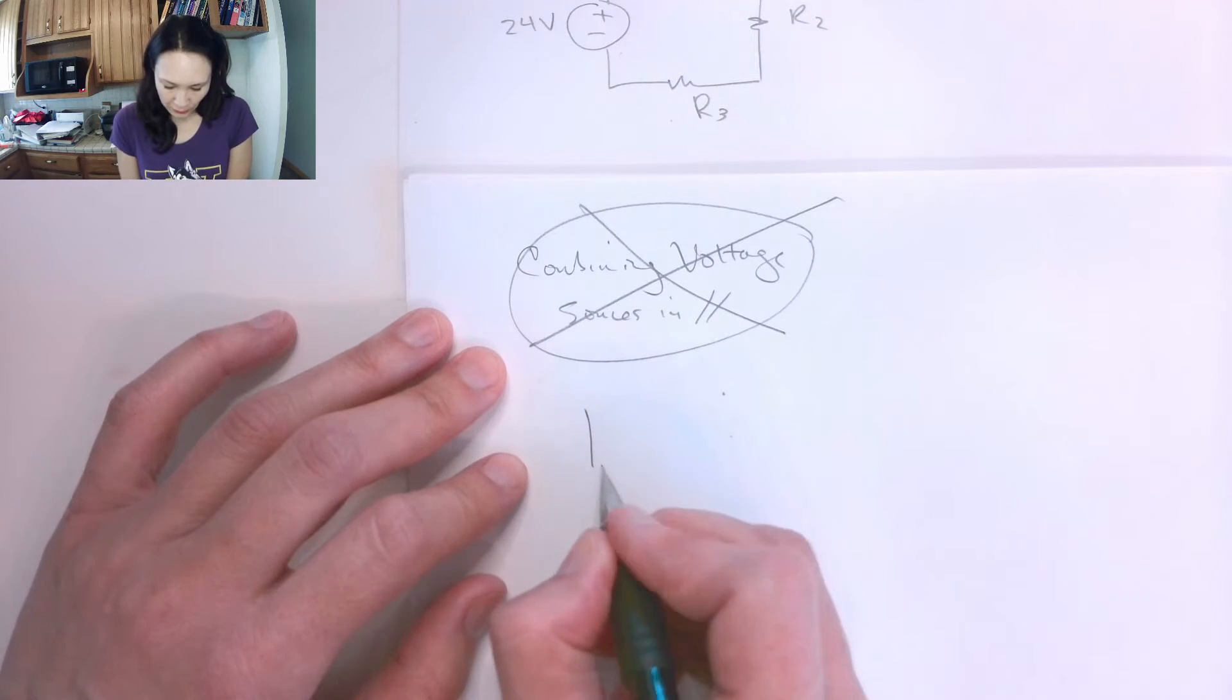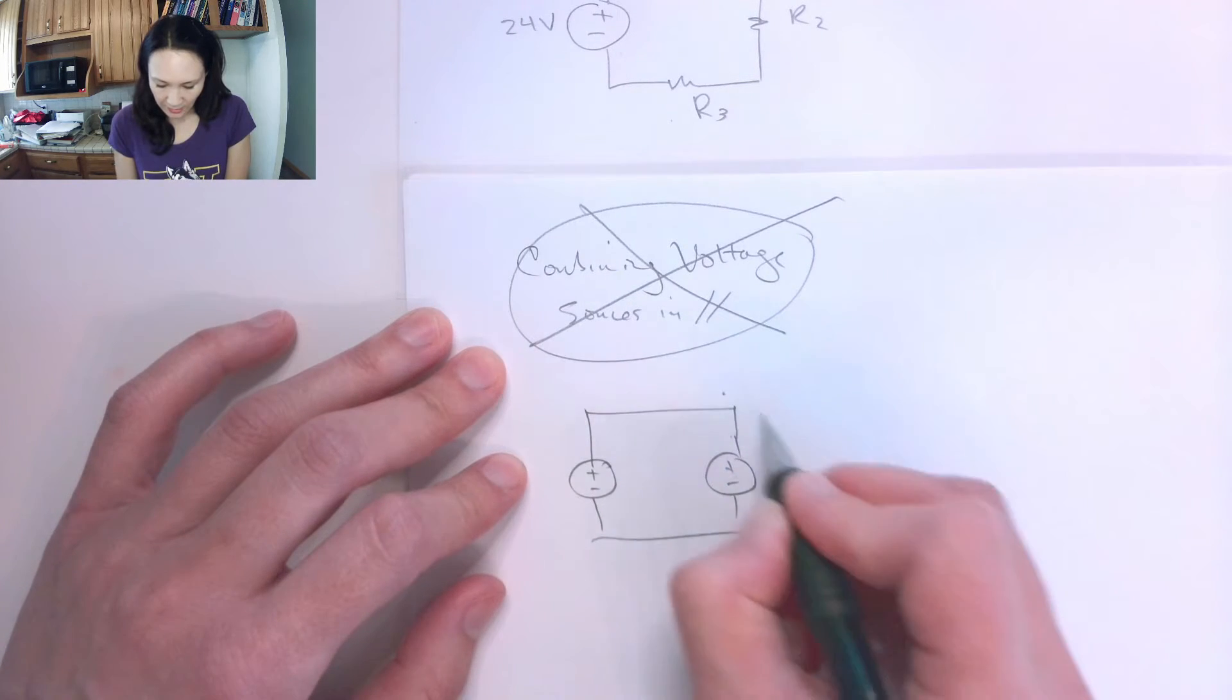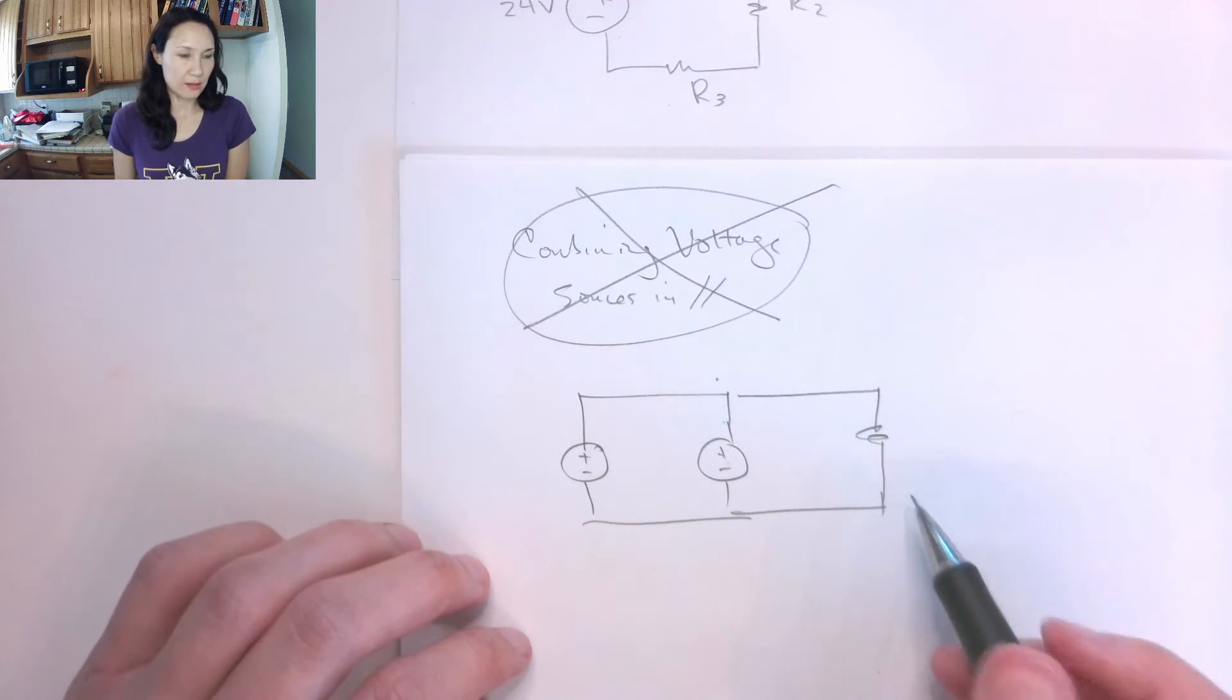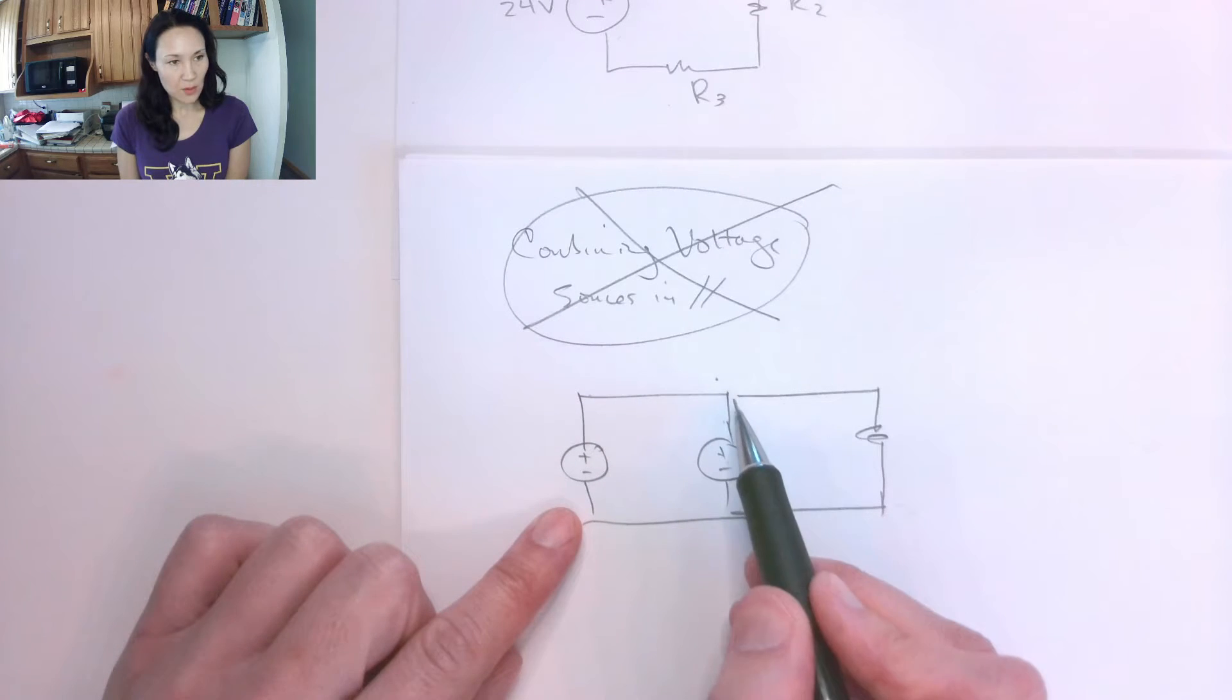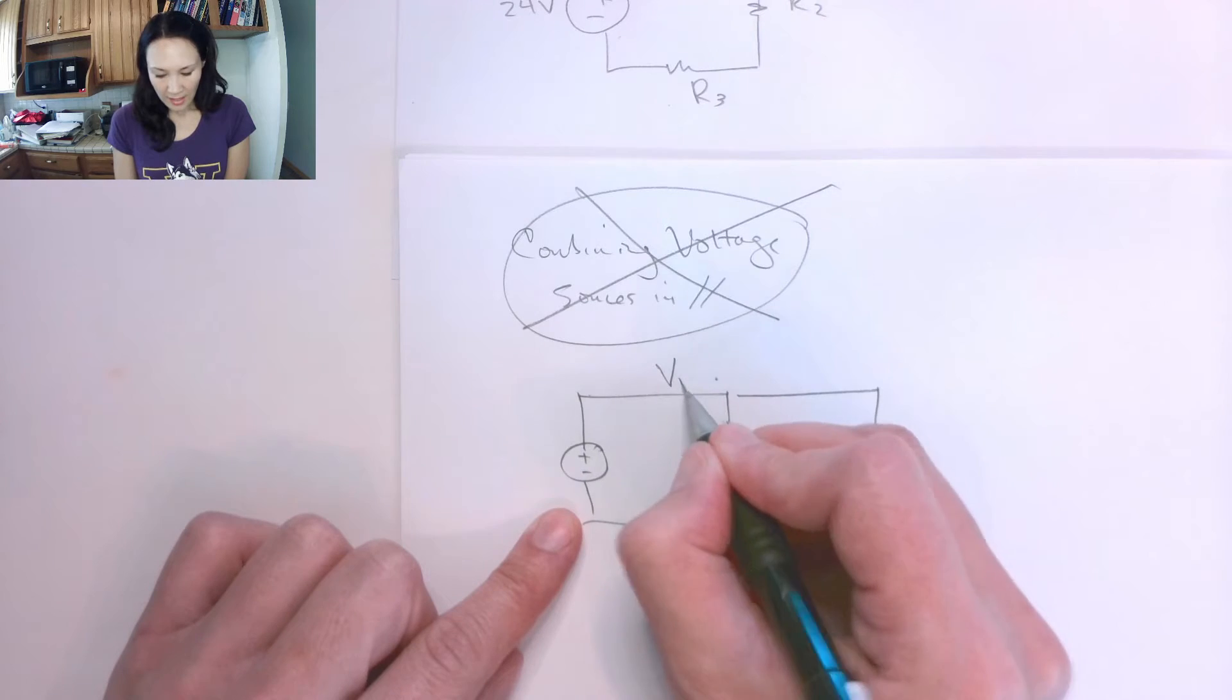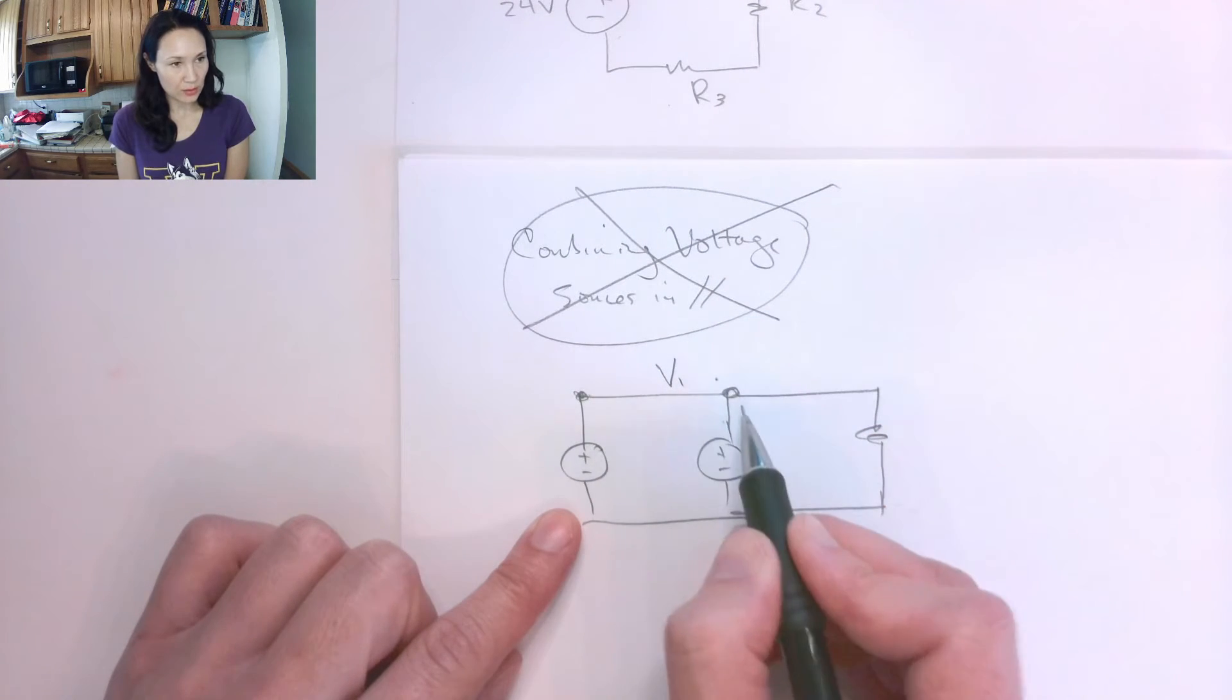The reason why is it can actually be dangerous. So suppose we have two voltage sources combined in parallel, and we hook this up to some kind of a parallel circuit like this. So since these are connected in parallel, this top node is going to have the same potential as here as it is here, right? Because these are just connected by a wire.